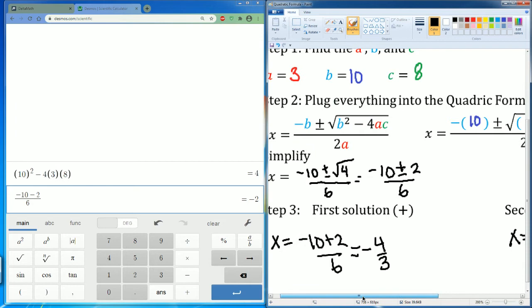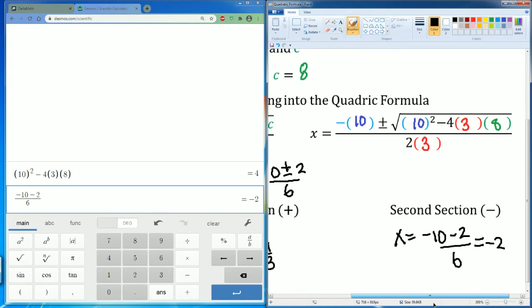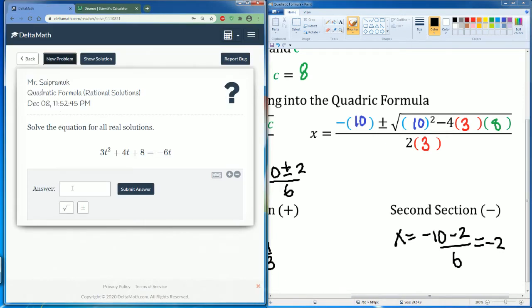The first one was negative 4 over 3. My second solution is negative 2. I use Desmos each time I need to calculate. So here, the answer, there's two of them.